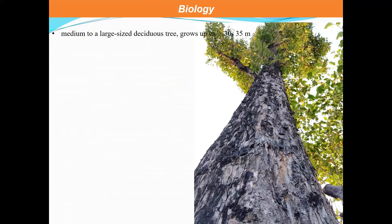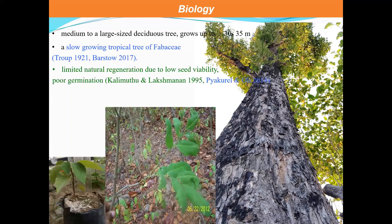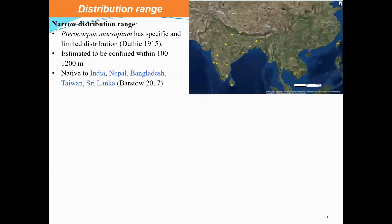What is the biology of this plant? It is a medium to large-sized tree, growing up to 30 to 35 meters. It is a slow-growing tropical tree of the family Fabaceae, with limited natural regeneration, poor seed viability, and poor germination — making it highly vulnerable. Its distribution range is narrow, confined within 100 to 1,200 meters elevation, and it is native to South Asia including India, Nepal, Bangladesh, and Sri Lanka. We have two species of Pterocarpus in the region and one species noted in China.